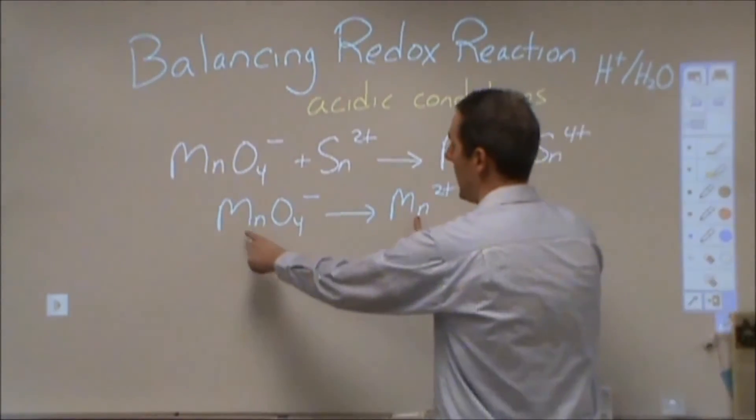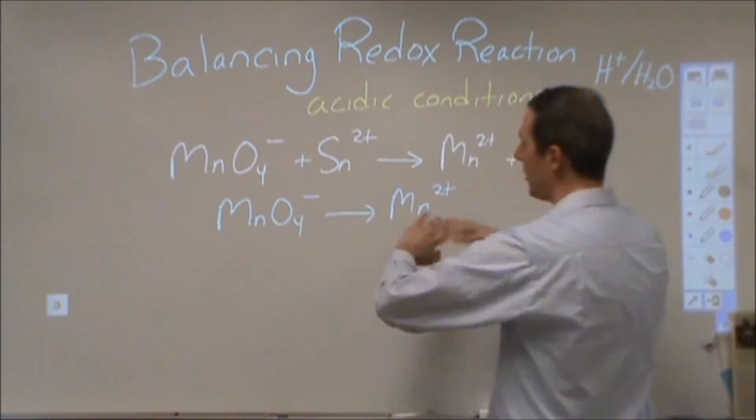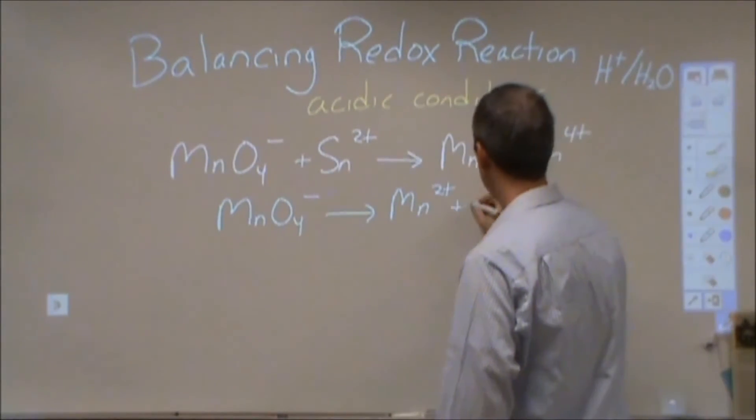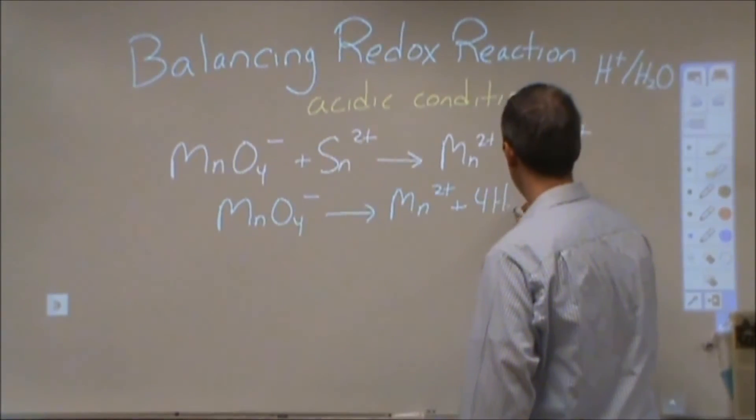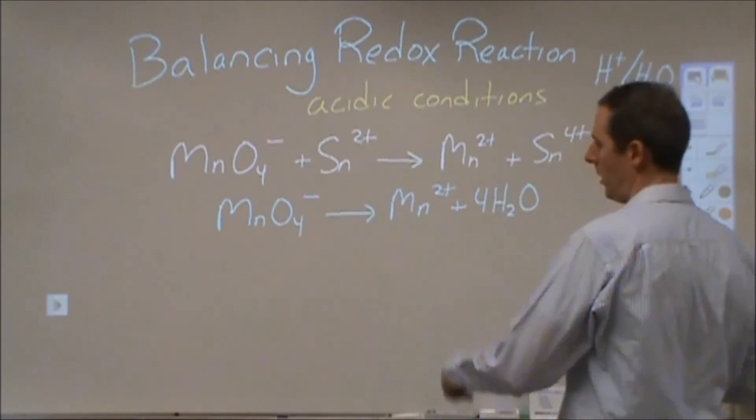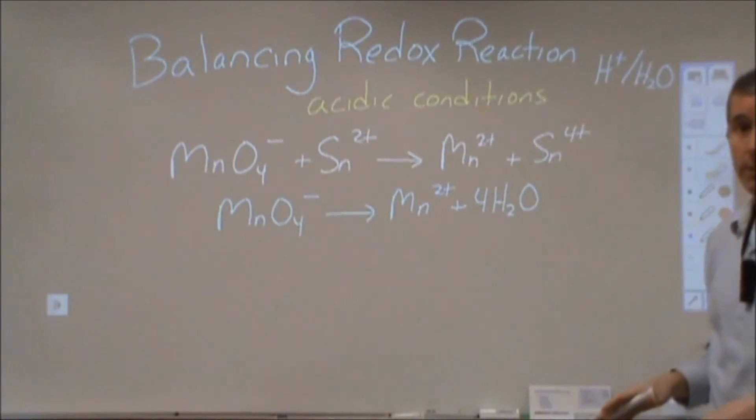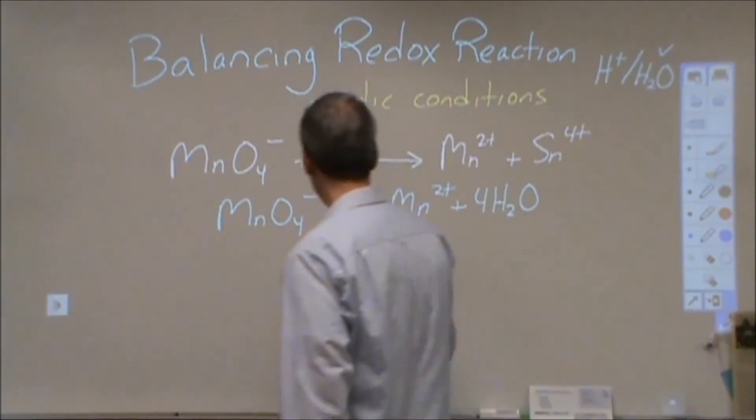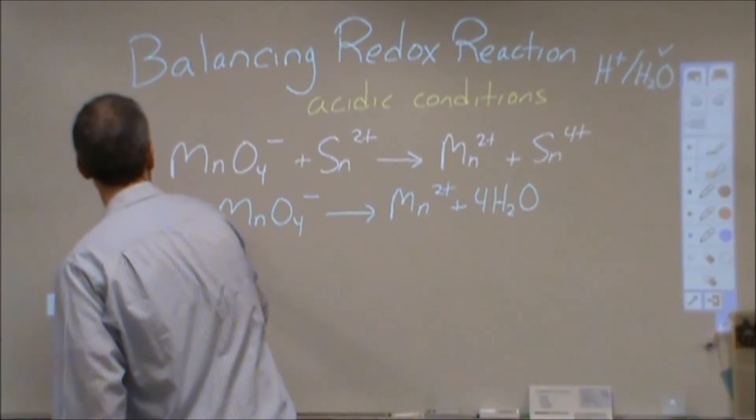So I would start by balancing my manganese. I have one of each and I'm ignoring all the charges for now. Then I would go through and balance all the other elements. For the oxygens, I would use four waters to give me four oxygens on both sides. So I've used that.